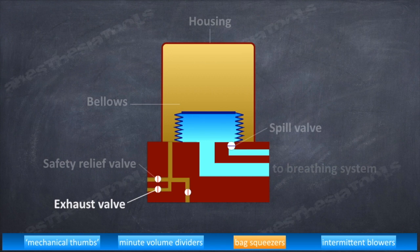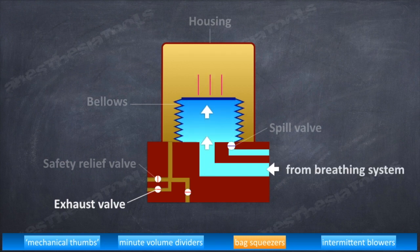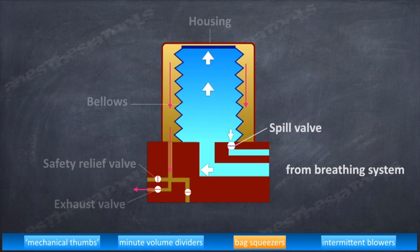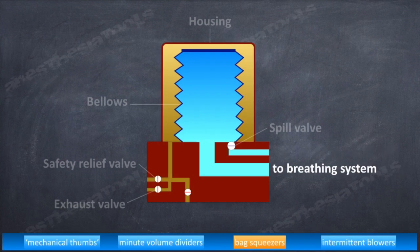Now we cycle into exhalation phase. The inlet valve for the drive gas closes and exhaust valve opens. Gas mixture from the breathing circuit is drawn into the bellows during exhalation as the pressure inside the housing falls. The drive gas escapes through the exhaust valve. Continuous filling of bellows may increase the pressure inside the bellows, causing spill valve to open, and the gas moves out through the spill valve into the scavenging system. The sequence of events repeat during each breath cycle.